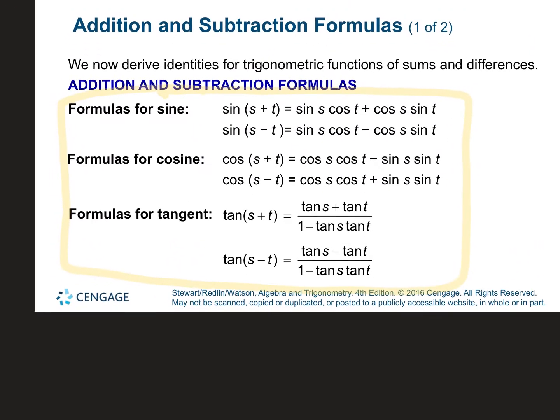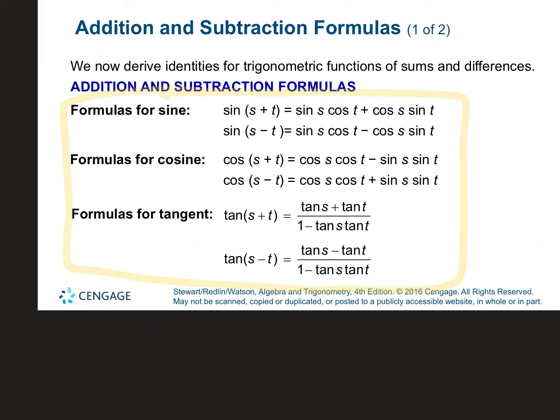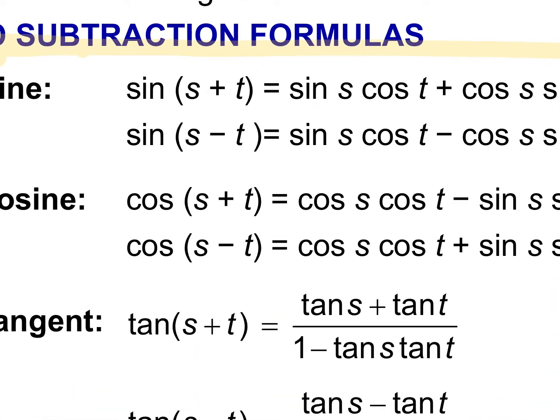So if it says to you, what is the sine of 110? Well, 110 is not on the unit circle. So you would find two angles that either added or subtracted to give you 110. That's how you figure out which formula to use.